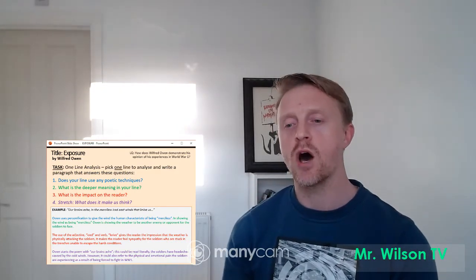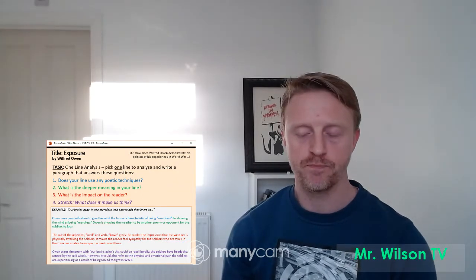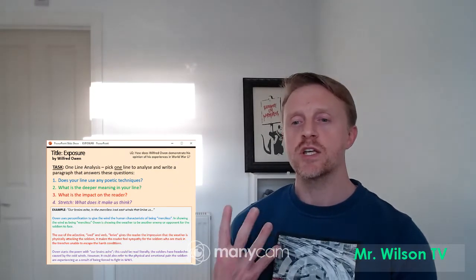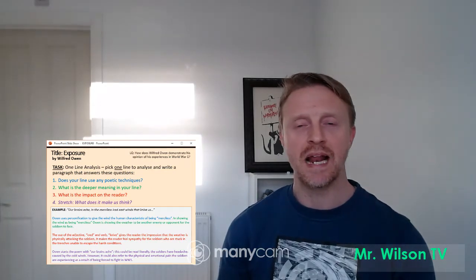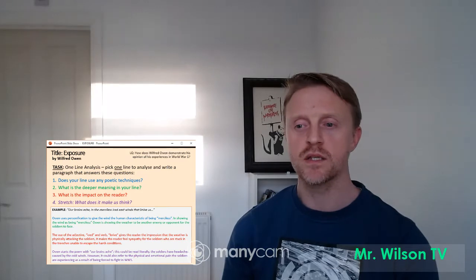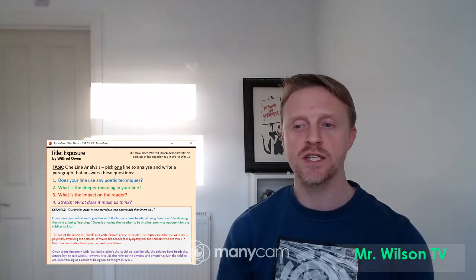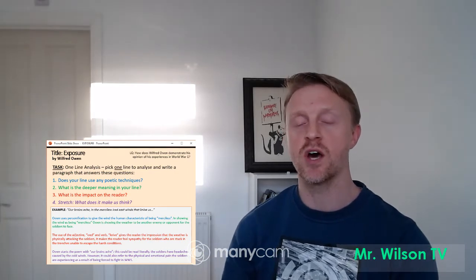So the first line I've picked is, our brains ache in the merciless iced east winds that knife us. So the way I might structure my one-line analysis would be to begin with, Owen uses personification to give the wind the human characteristic of being merciless.